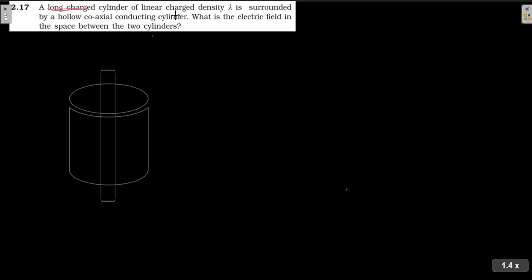A long charged cylinder of linear charge density lambda, surrounded by a hollow coaxial conducting cylinder. This is linear charge cylinder. The charge density is linear lambda. And this is in a hollow cylinder.